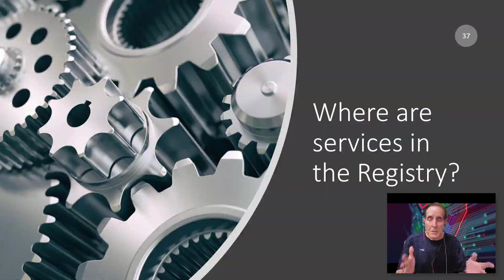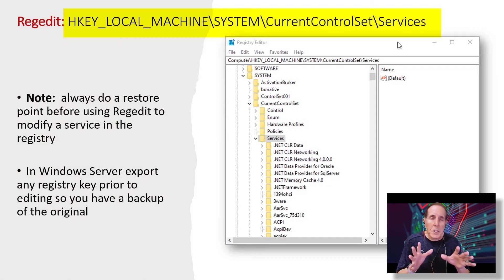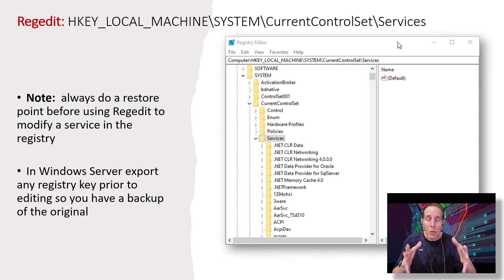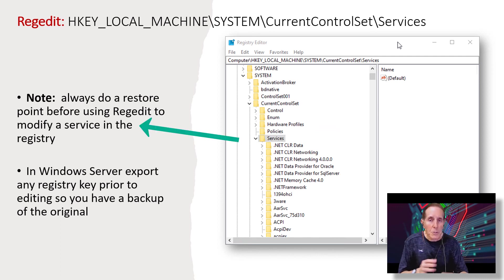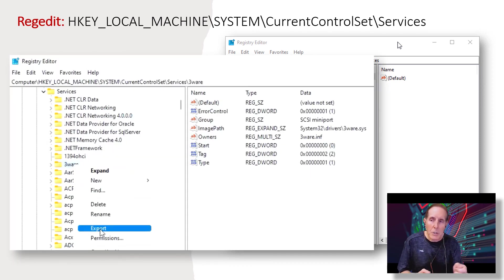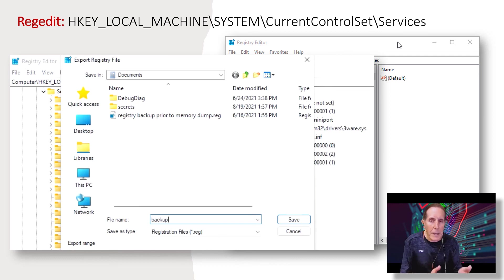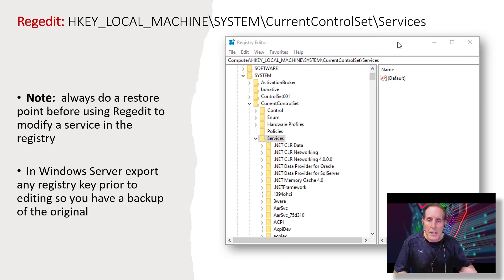No administrator can talk about Windows services without also talking about the registry. Services are pretty easy to find in the registry: HKEY Local Machine, System, Current Control Set, Services. And all of the registry controls for those services are found there. If you're working on the client, make sure you do a restore point before you start modifying registry settings related to services. If you're on Windows Server, you can export any registry key so that you can have a backup should you need to restore that key.